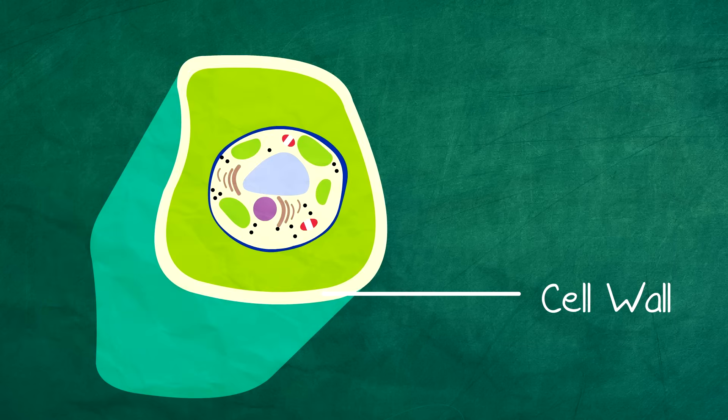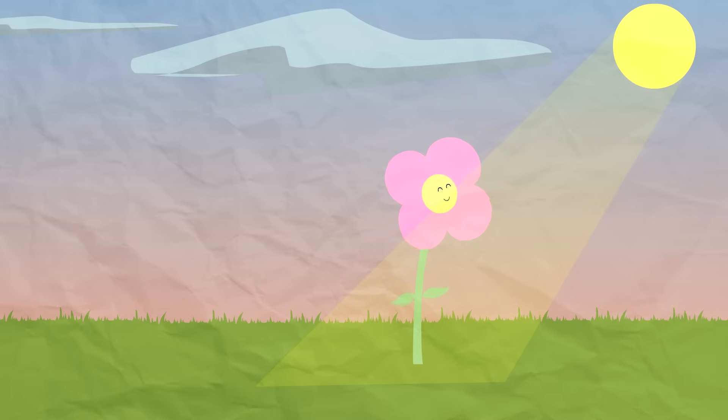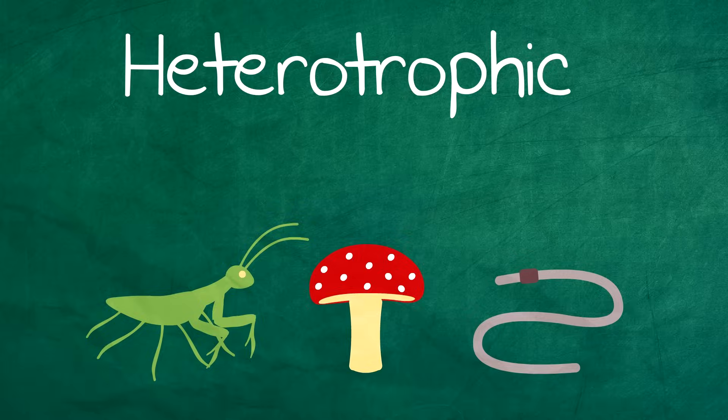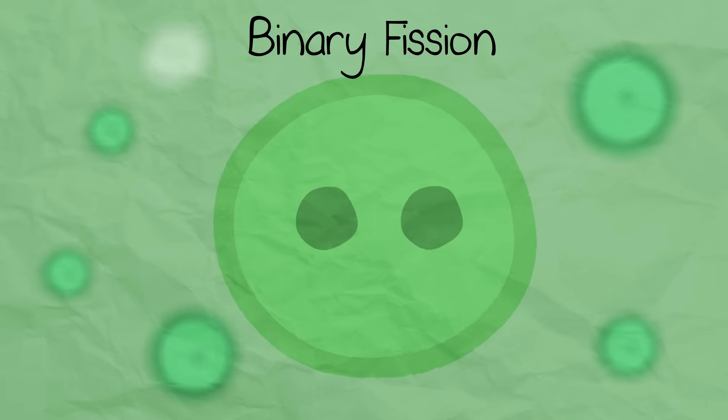They have cell walls and are autotrophic using photosynthesis and chemosynthesis, and are heterotrophic. They're defined by binary fission, not mitosis.